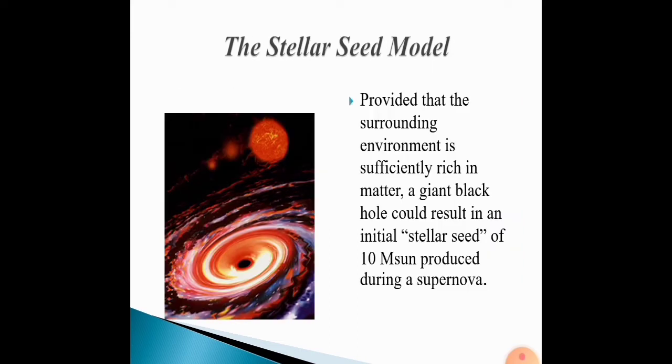The stellar seed model. Provided that the surrounding environment is sufficiently rich in matter, a giant black hole could result from an initial stellar seed of 10 solar masses produced during a supernova.